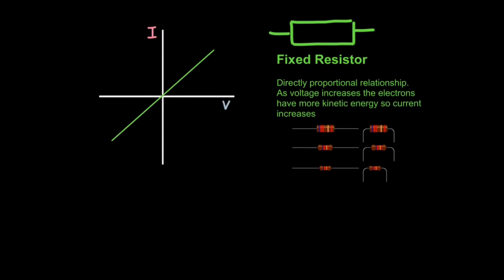But you need to know three voltage current graphs specifically. One is for a fixed resistor. This is the easiest one because it generally obeys Ohm's law. Fixed resistors can take quite a lot of heat before it affects current. So we generally get a directly proportional relationship using the voltages we use in a school lab.